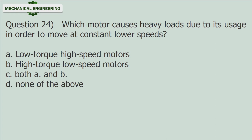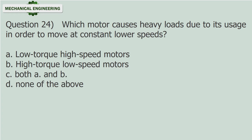Question 24: Which motor causes heavy loads to move at constant lower speeds? A) low torque high-speed motors, B) high torque low-speed motors, C) both A and B, D) none of the above. Answer: High torque low-speed motors. Please comment, like and share.